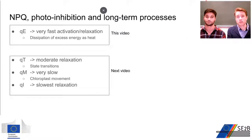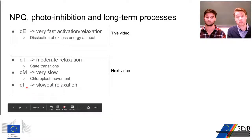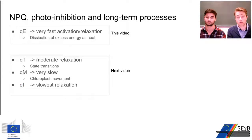Non-photochemical quenching has many different components to protect the organism. One of these components is energy quenching — a very fast component involving dissipation of excess energy as heat, which we will learn more about today. Other factors which are a bit slower are state transitions and chloroplast movements. The slowest relaxation is inhibition, which is caused by damage activated by reactive oxygen species.